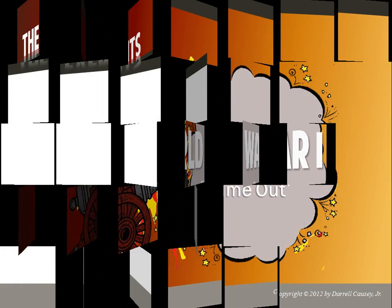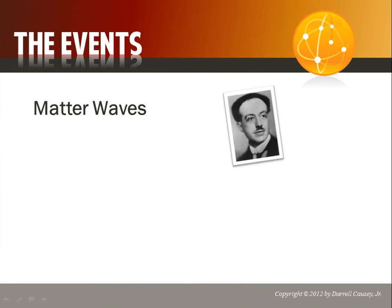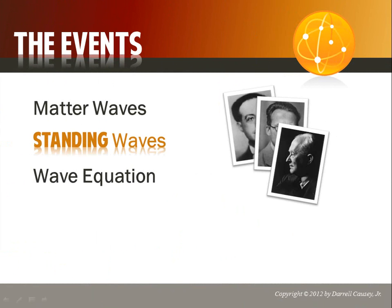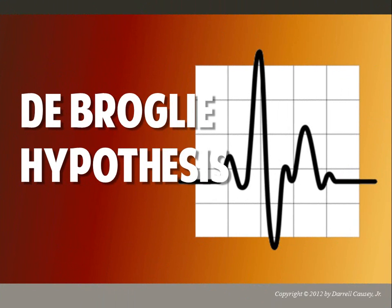The events that led up to the wave mechanical model: we have matter waves by Louis de Broglie, standing waves and formulas by Erwin Schrödinger, the wave equation taken and used as a model by Max Born, and then the uncertainty principle presented by Werner Heisenberg.